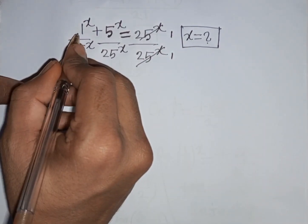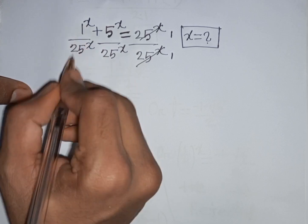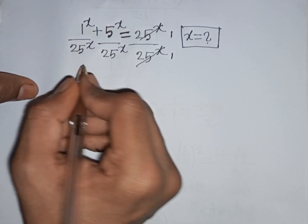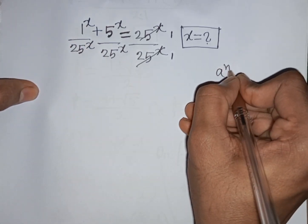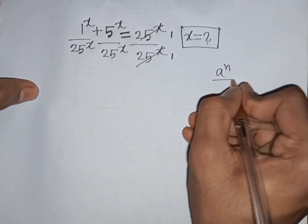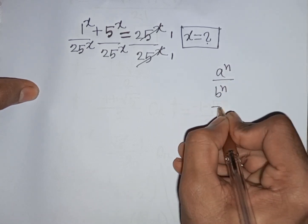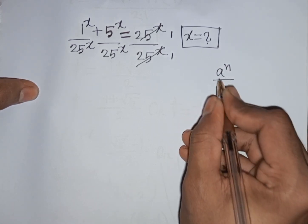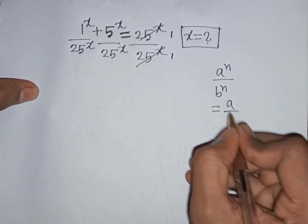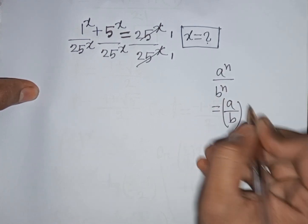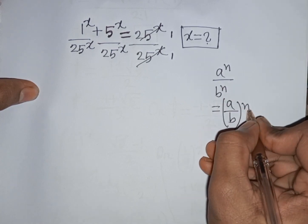Now we see that x is the same power but with different bases. According to the exponential rule, a power n over b power n is equal to (a over b) raised to the common power x.